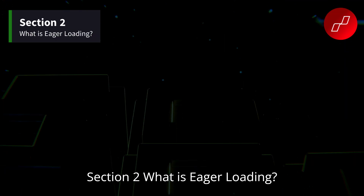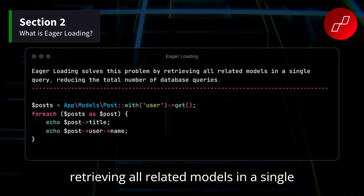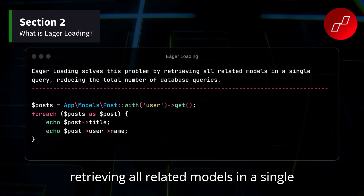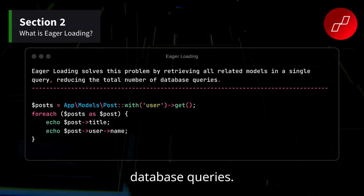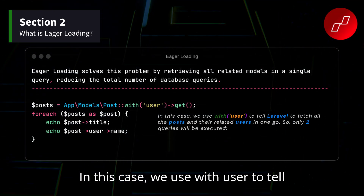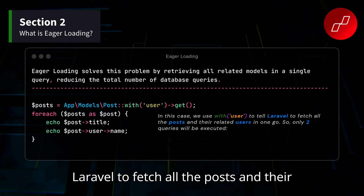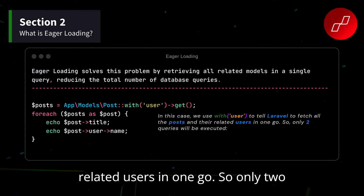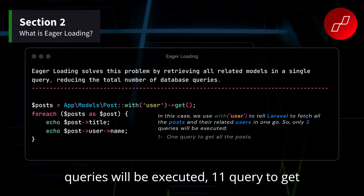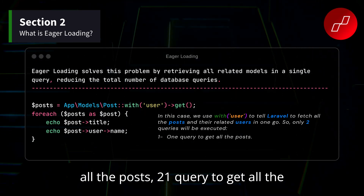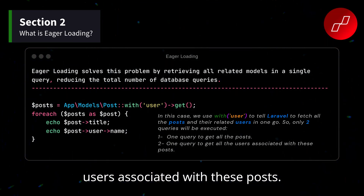Section two: What is eager loading? Eager loading solves this problem by retrieving all related models in a single query, reducing the total number of database queries. In this case, we use `with('user')` to tell Laravel to fetch all the posts and their related users in one go. So only two queries will be executed: one query to get all the posts, and one query to get all the users associated with these posts.